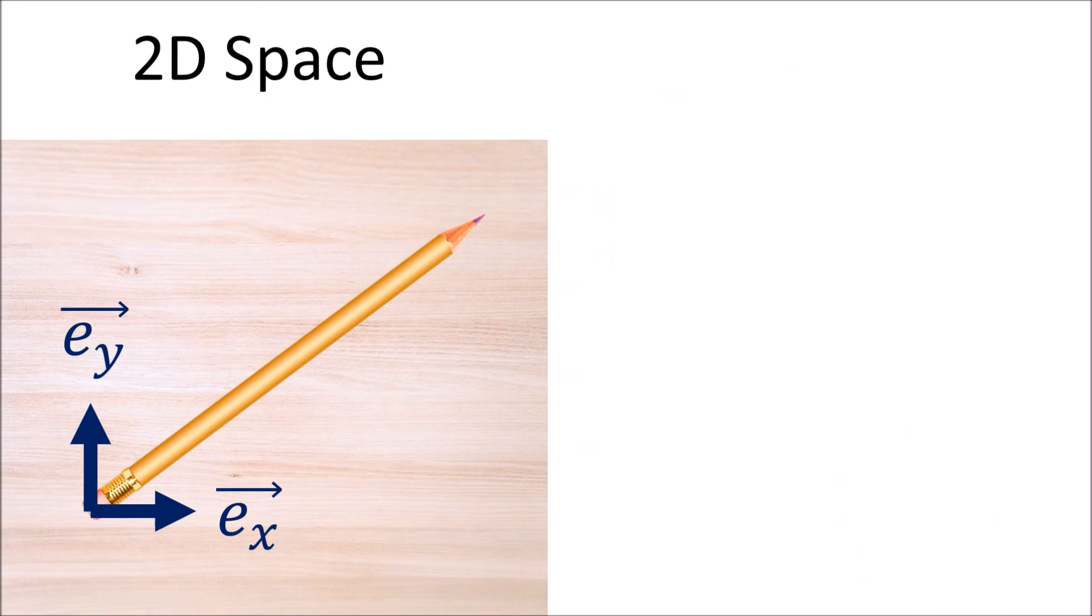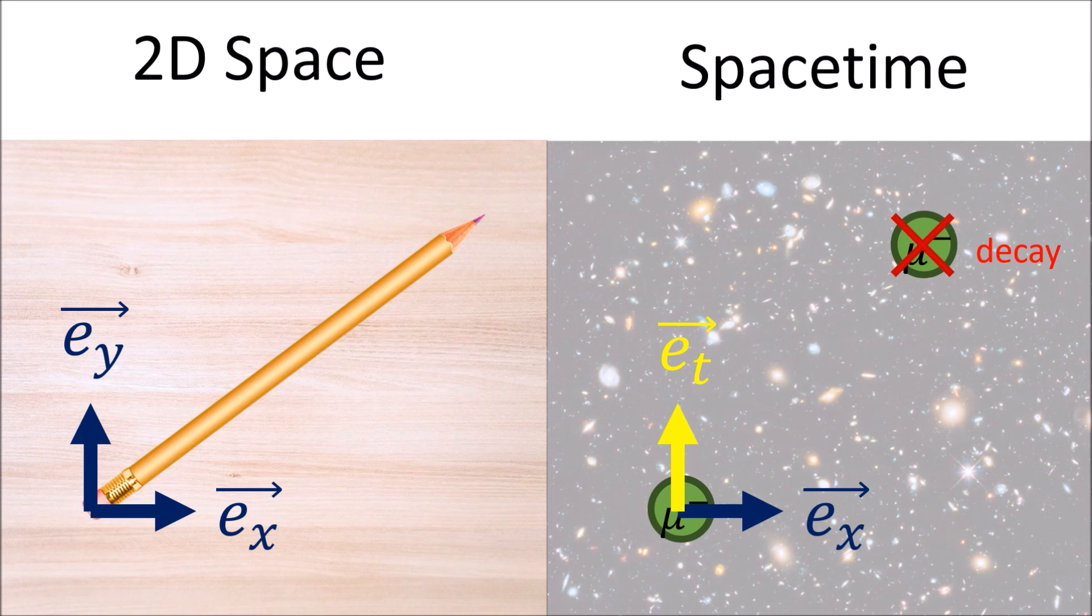The only difference between the pencil and the muon decay is that for the pencil example, our vector lives in 2D space, measured with X and Y. But the decaying muon is measured in spacetime, using X and T. Now, I understand that the concept of spacetime vectors might seem confusing right now. And again, I'll be explaining this in greater detail in later videos. I'm just trying to prepare you for the idea that measuring a vector using a different basis can give us different results, and this idea is very important in relativity.